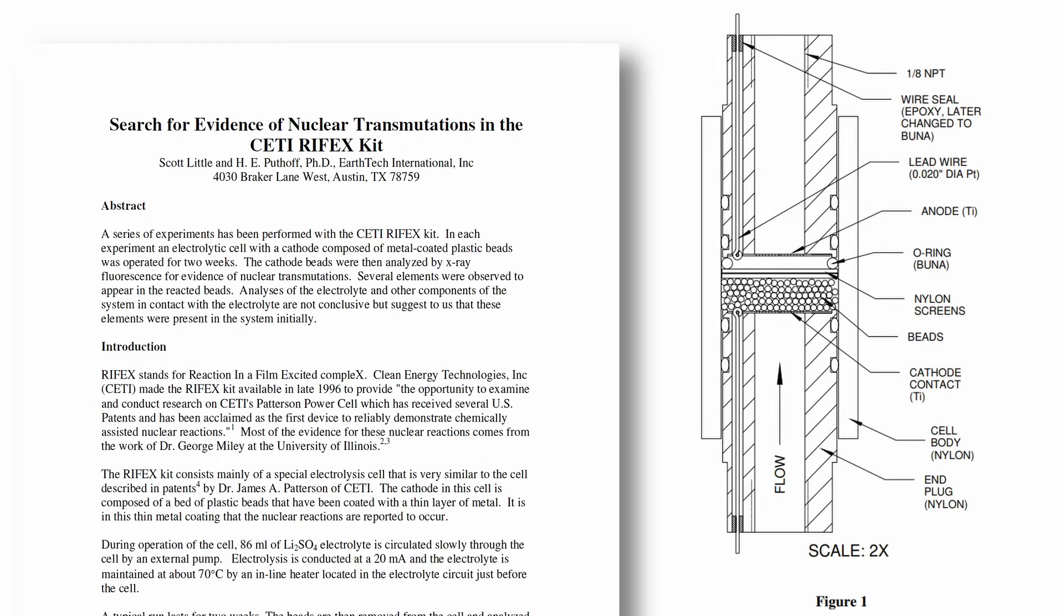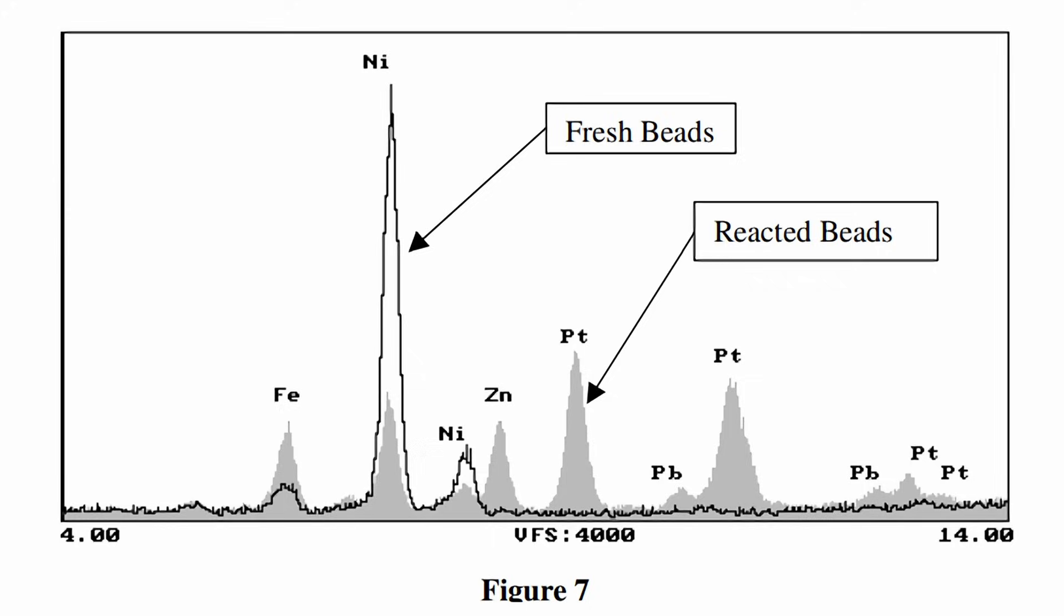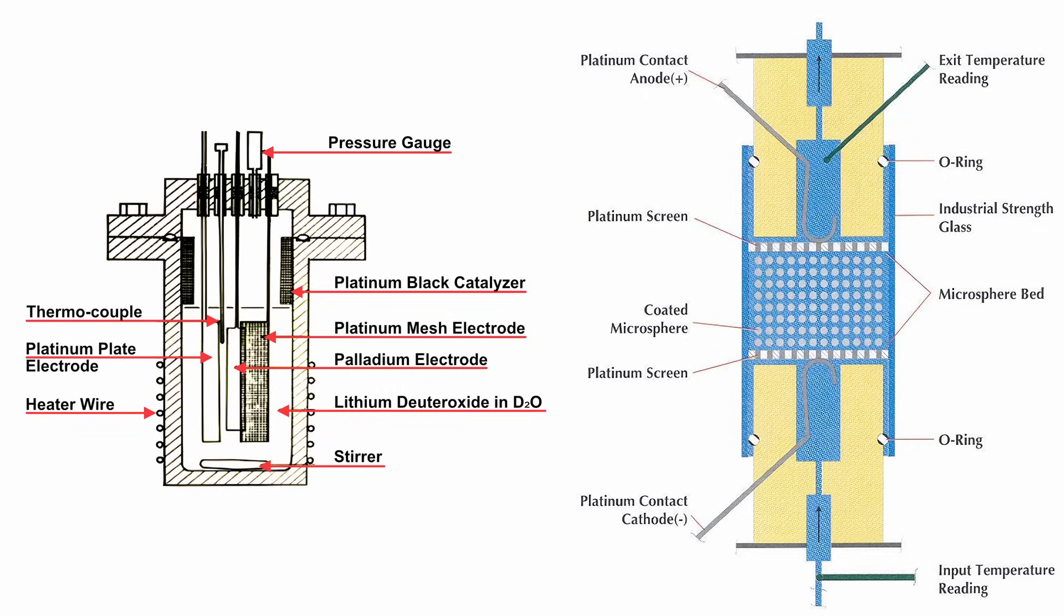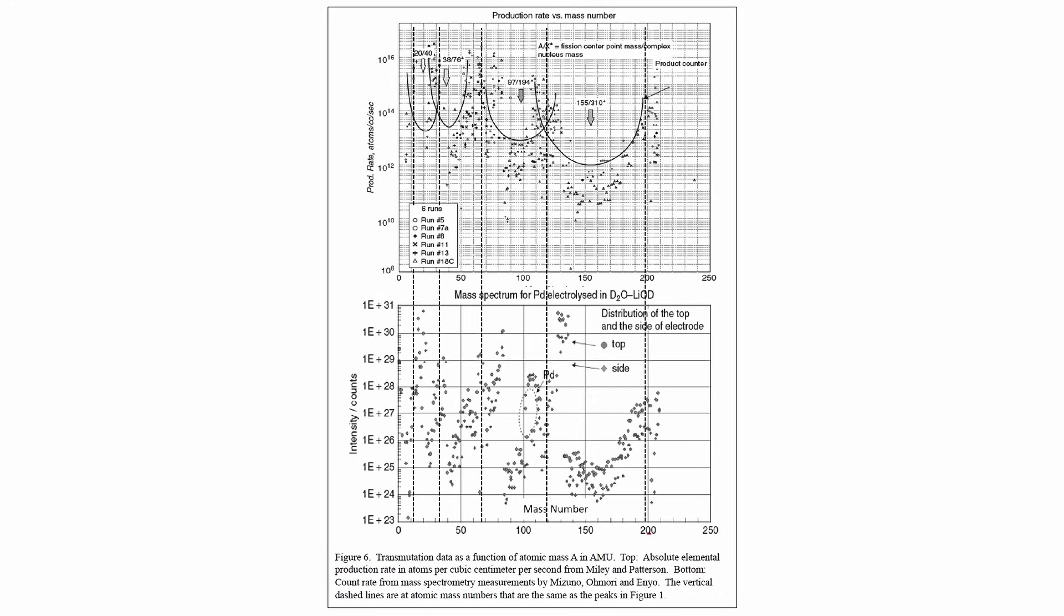Little and Patov used electrolyzed plastic beads coated in palladium and nickel, and elemental analysis were conducted via X-ray fluorescence techniques, which detected transmuted elements across a range of atomic numbers. Despite these experimental differences, including variations in materials, measuring techniques and even electrolytes, a striking pattern emerged. Each dataset revealed peaks at specific ranges of atomic masses.